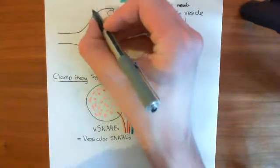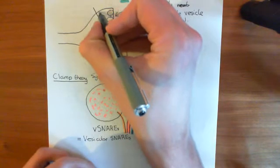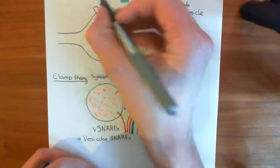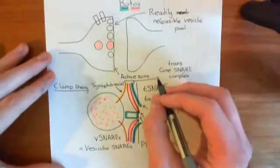And what that's going to do is it's going to open voltage-gated calcium channels in the membrane of the axon terminal. So let's draw a voltage-gated calcium channel up here.